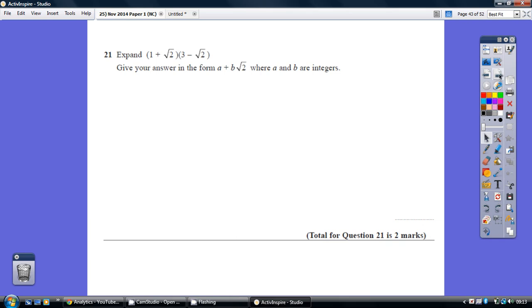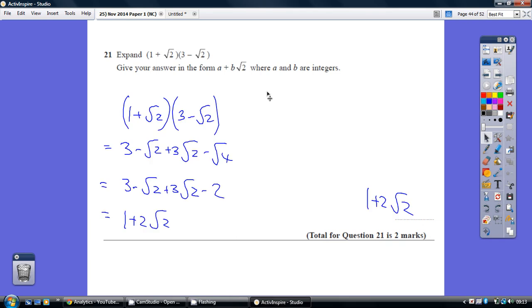Question 21. So basically, this is just a FOIL. This is where we've got to multiply each of the terms in the first bracket by each of the terms in the second bracket.